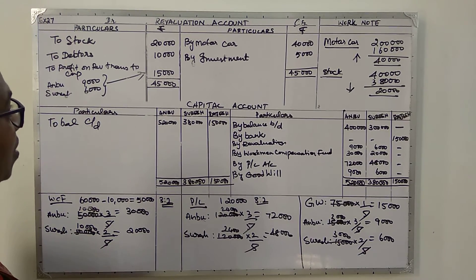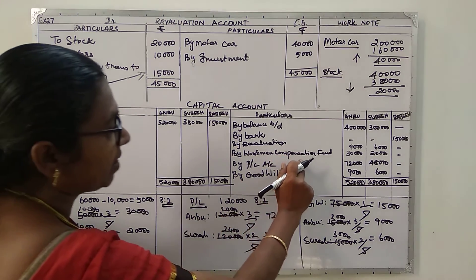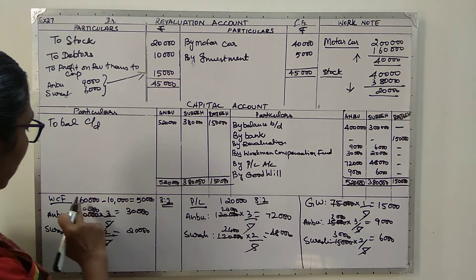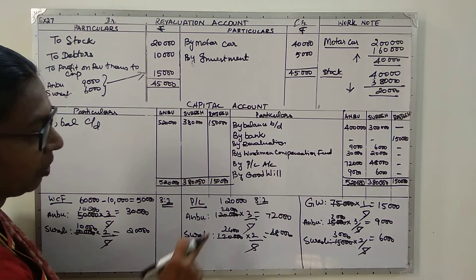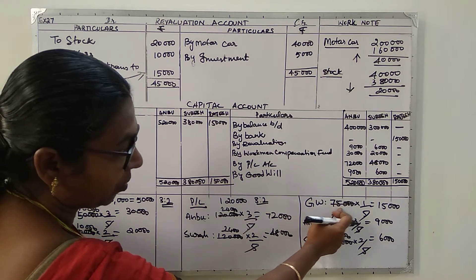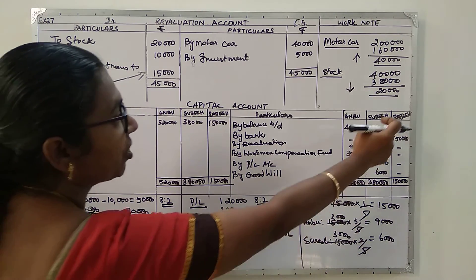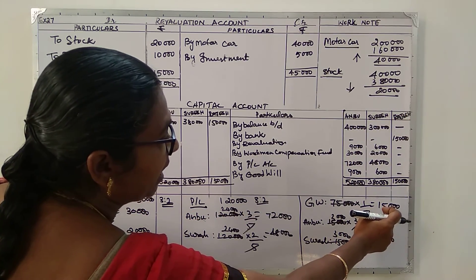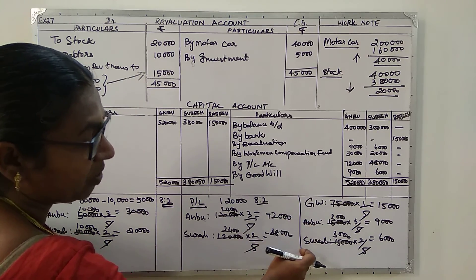Take care when doing the revaluation account. A common mistake is to share the full sixty thousand from the workman compensation fund instead of the net amount of fifty thousand after the claim. Also note that Rajesh's share of goodwill is fifteen thousand (75,000 × 1/5), shared between Anbu as nine thousand and Suresh as six thousand.